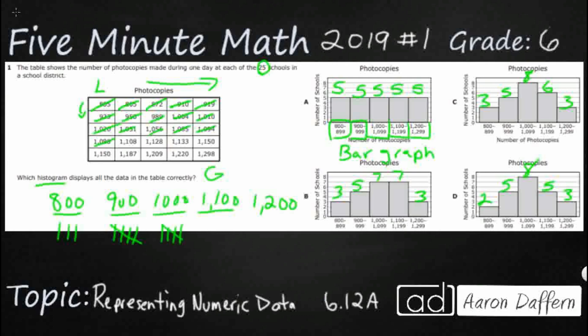For 1100 to 1199, I've got 1, 2, 3, 4, 5, 6. And then 1200 looks like I've got 3.